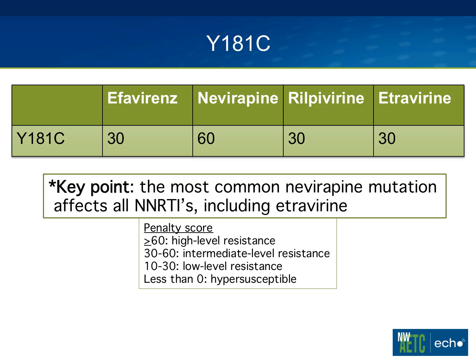The Y181C shows a very different pattern than K103N. It causes intermediate resistance to efavirenz, high-level resistance to nevirapine, and also intermediate-level resistance to rilpivirine and etravirine — so much more cross-resistance. The key point here is that the most common nevirapine resistance mutation affects all of the NNRTIs, including etravirine. This is very different from what we saw with K103N.